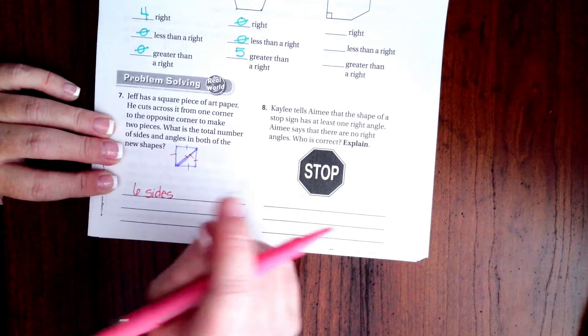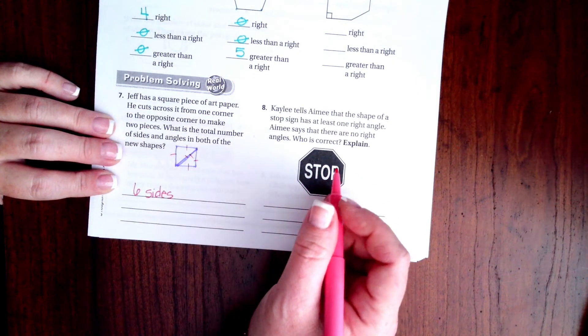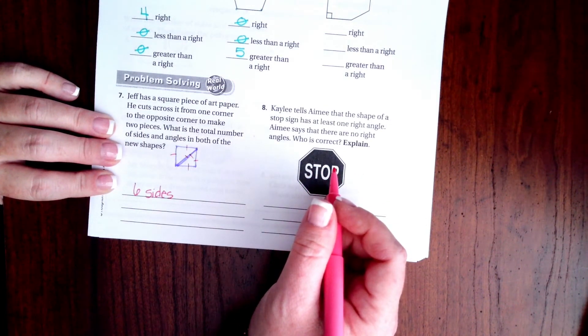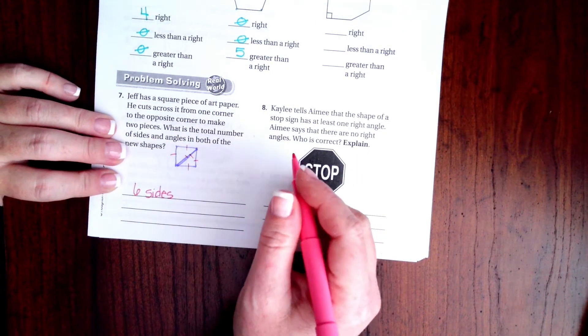Because it's a triangle, all triangles have degrees that are smaller than a right angle. I'm sorry, greater than a right angle.